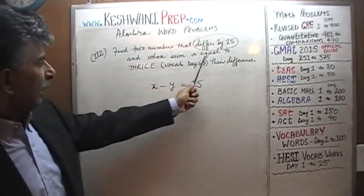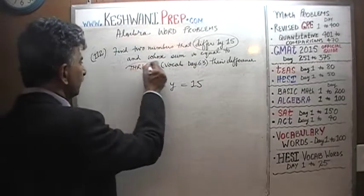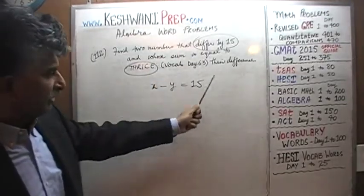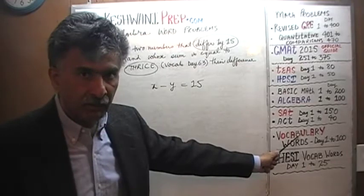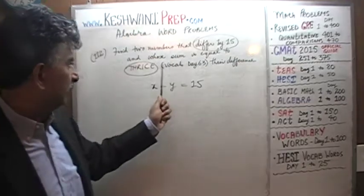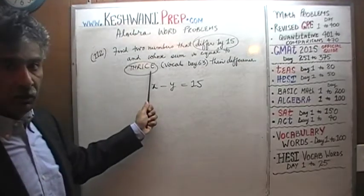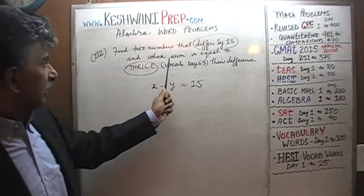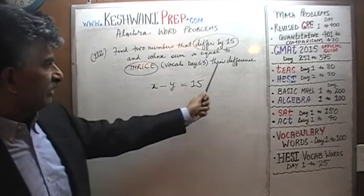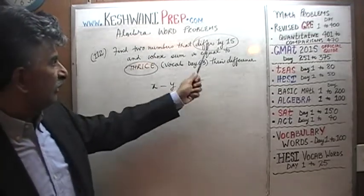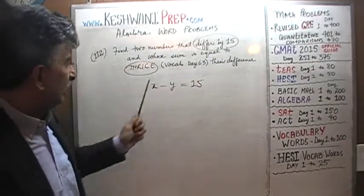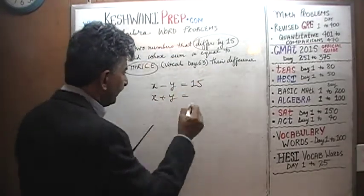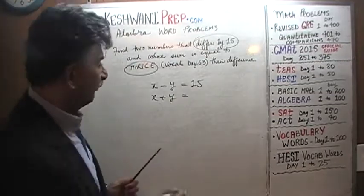Whose sum happens to equal to thrice. We learned the word thrice in our vocabulary lesson on day number 63 — thrice is a very fancy way of saying three times as much. So their sum has to equal three times their difference. Their difference we know is 15, so three times their difference is 45.